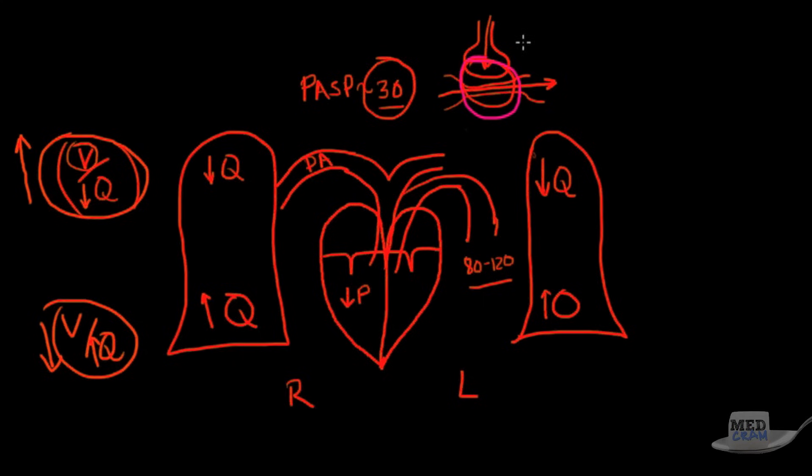You could probably see that if you have a lot of ventilation but no perfusion that would be kind of like your trachea. Your trachea has got a lot of ventilation, but there is no perfusion to that area in terms of capillaries and so we call that dead space.